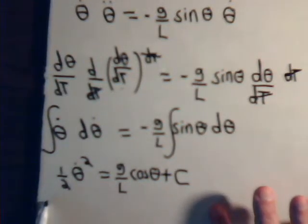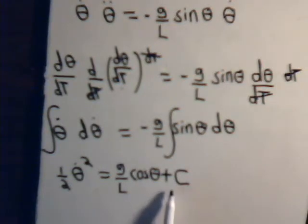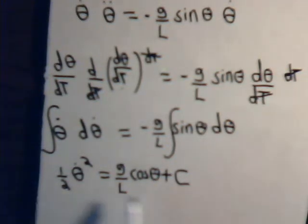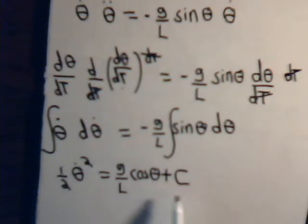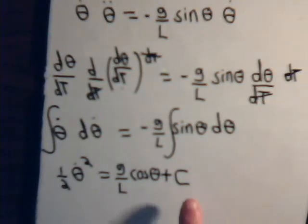So the equation for the pendulum is: one-half theta-dot-squared equals g over L times cosine of theta plus C. We still need to determine the constant of integration. We'll stop here and take that up in part two of this video, where we'll find the constant and have the complete equation for the pendulum's angular velocity.